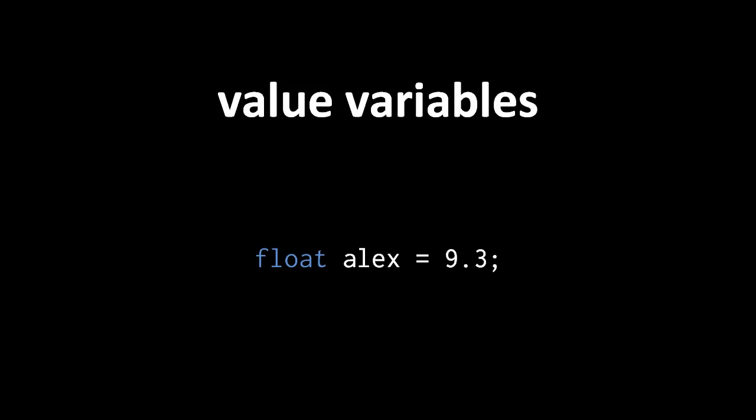Variables in C are always value variables. Here, for example, this float variable, Alex, occupies in memory the number of bytes required to store a float value, and directly stores any float value assigned to it.